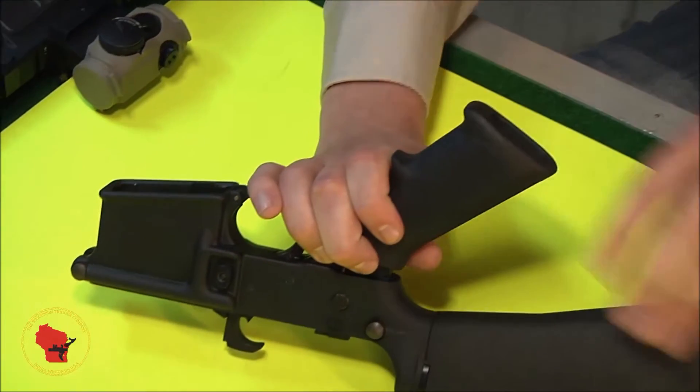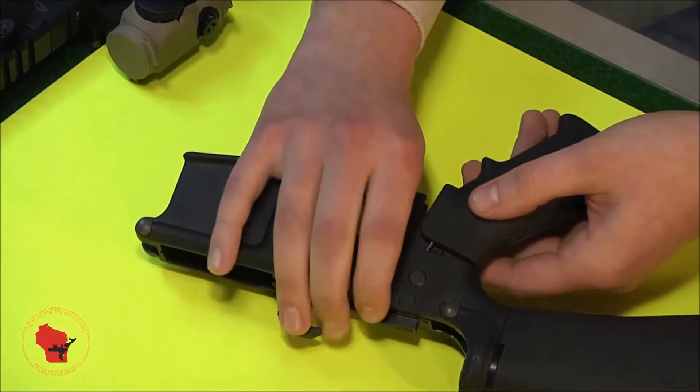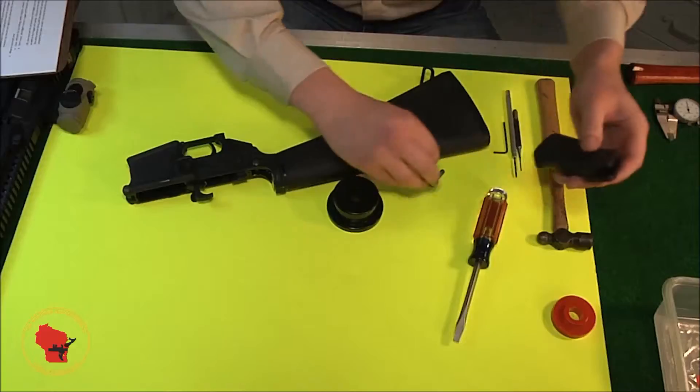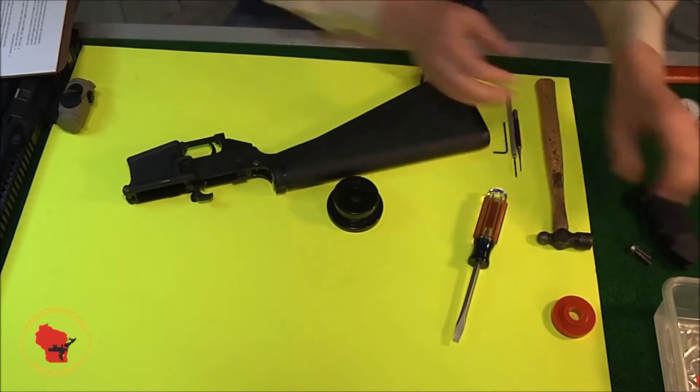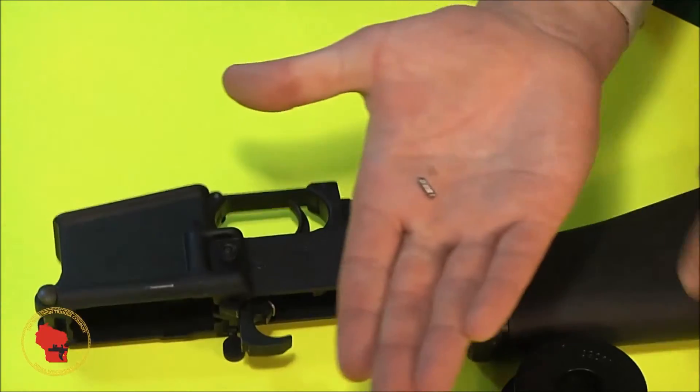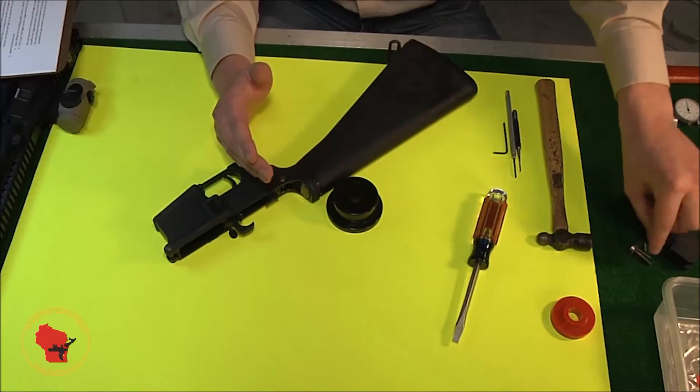Now as you get this loose, you want to keep an eye on the detent and the detent spring. They like to fly all over the place. I take those and set them over to the side. Knock the detent pin out. Set that over to the side as well.